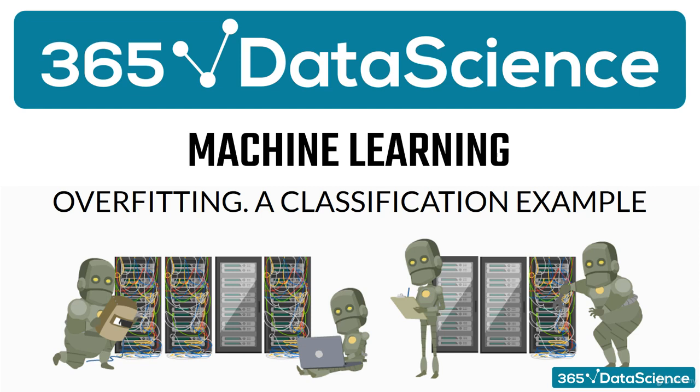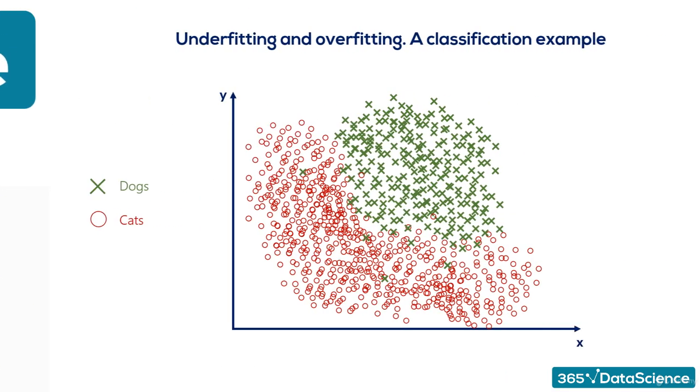Time for our classification example. The two main types of supervised learning are regression and classification, and we are trying to show you the most concepts in terms of both regression and classification. We'll do the same here. Here's our example.